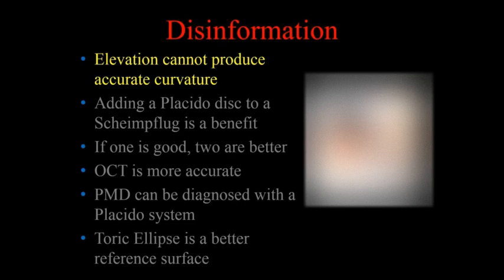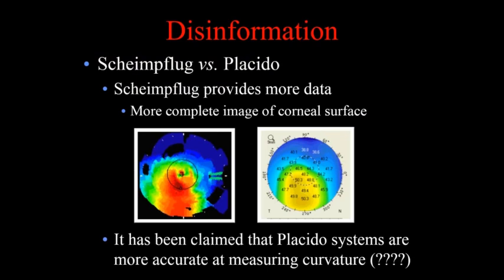A common statement from proponents of placido is that placido systems are inherently more accurate in producing curvature than elevation systems. That is somewhat of a disinformation. Scheimpflug clearly provides more data than placido does. Placido systems only image, under the best circumstances, about 8 millimeters, while Scheimpflugs can easily get out to 10 or 11 millimeters on the cornea. Placido systems rely on the tear film, so any tear film irregularity causes data loss. Scheimpflug is not a reflective system — it's an optical cross section, so surface regularity has no real effect.